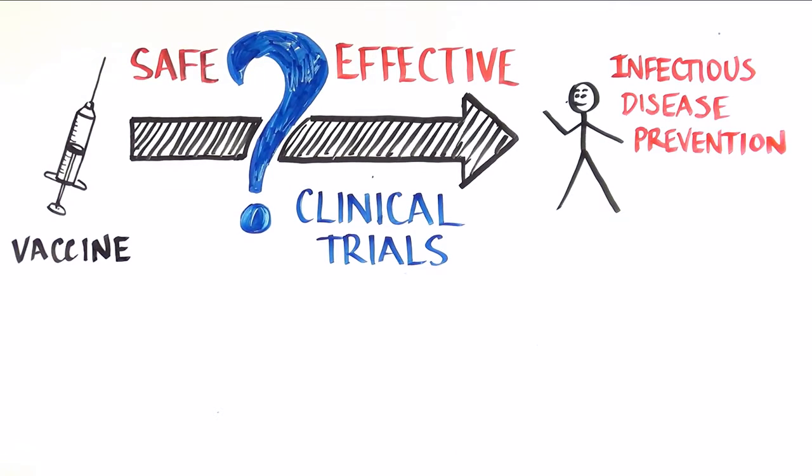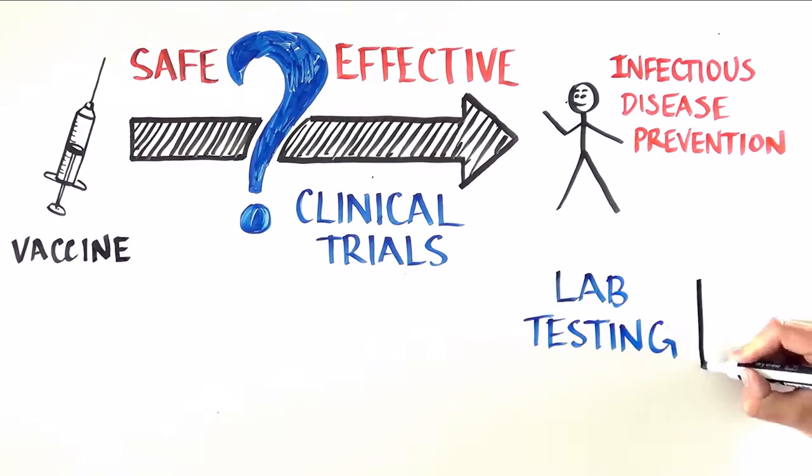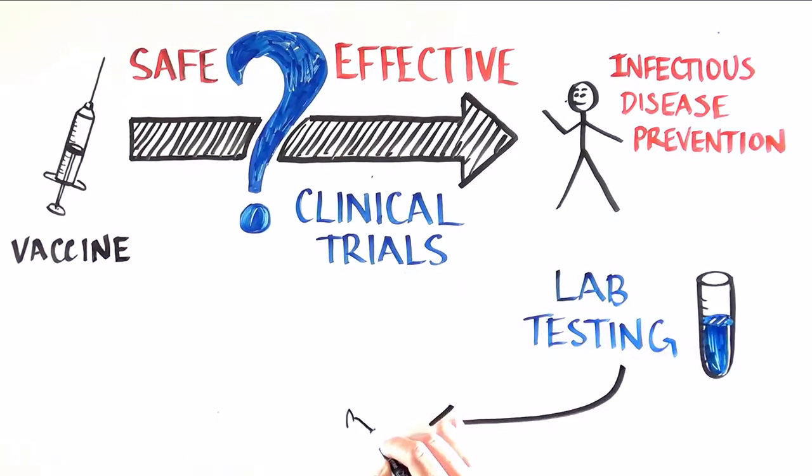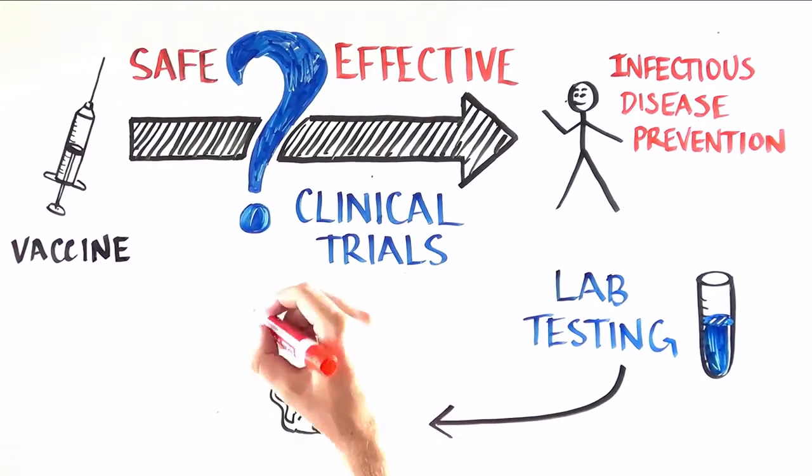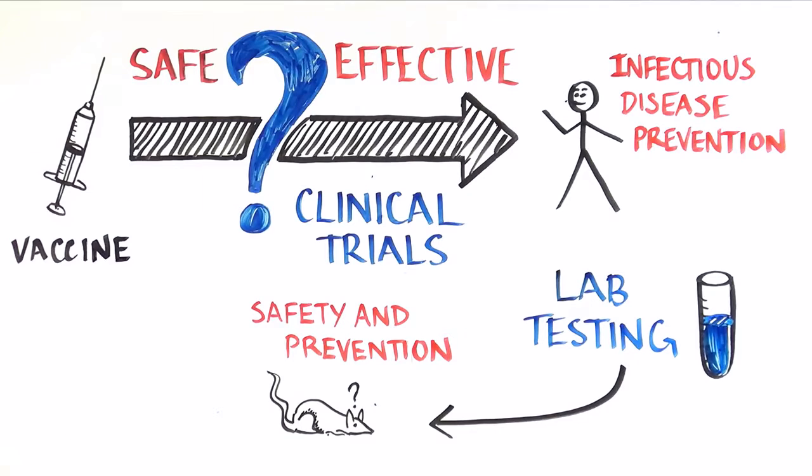The first thing to know is that a lot of testing is done before a vaccine ever gets tested in humans. There is a long process of development in the laboratory, and testing both for safety and for protection in animal studies. After we have a vaccine that looks both safe and promising in preventing infection in the laboratory, we begin testing in humans.